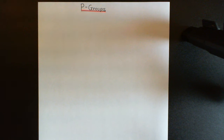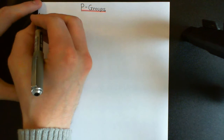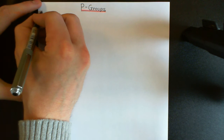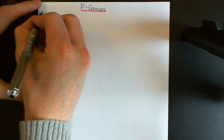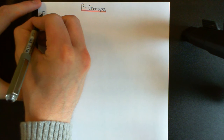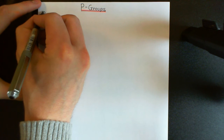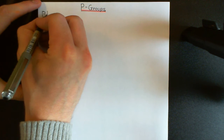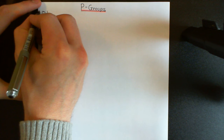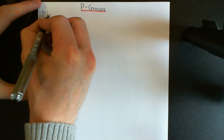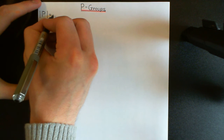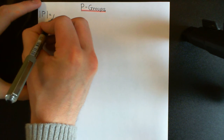First let me just remind you of the definition of a P-group. A P-group, often denoted capital P as opposed to capital G, is quite simply a group where the order is a prime number — a certain prime natural number, so 2, 3, 5, 7, 11, 13, 17, 19, etc.